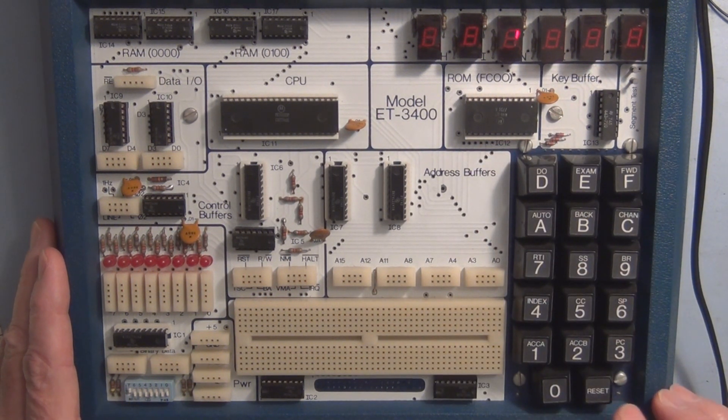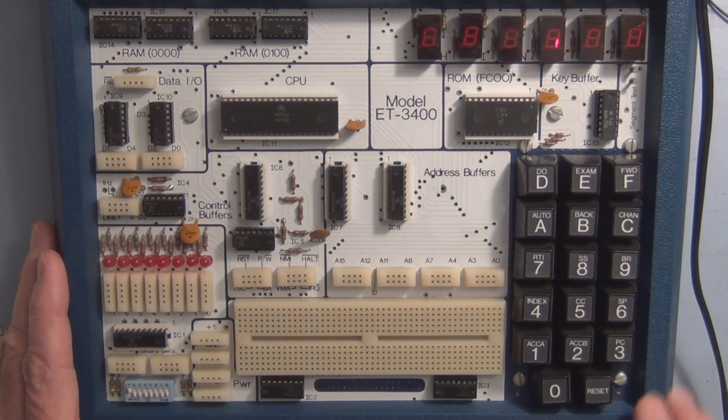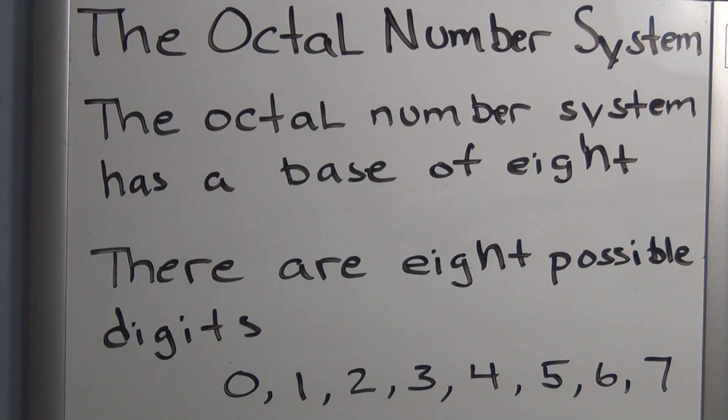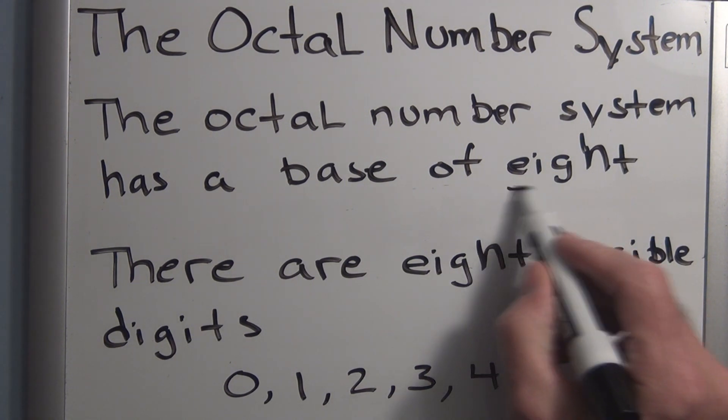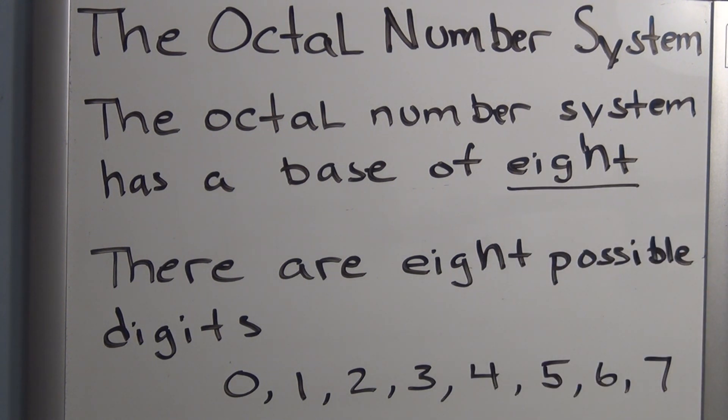But let's get on to the octal and hexadecimal number systems. Starting with the octal number system, the main difference is the octal number system has a base of eight, meaning there are eight possible digits: Zero, one, two, three, four, five, six, and seven.